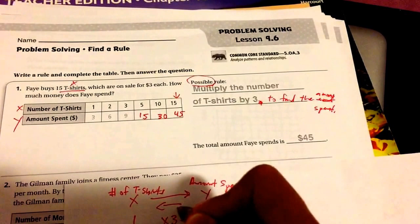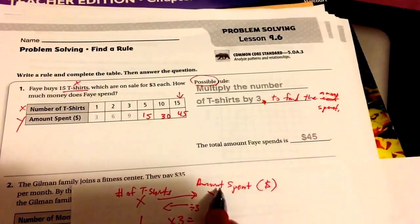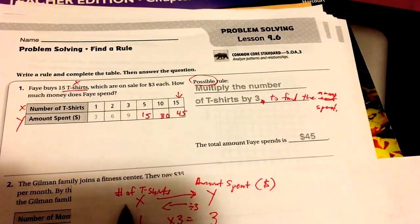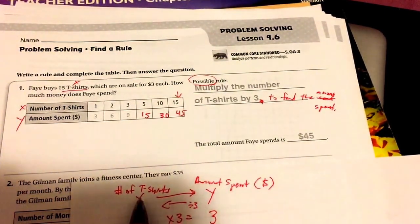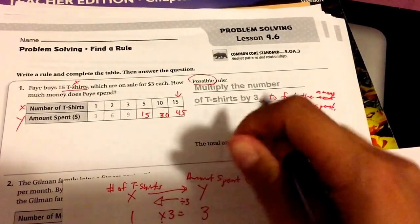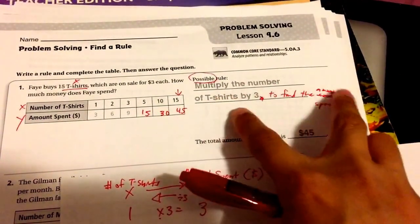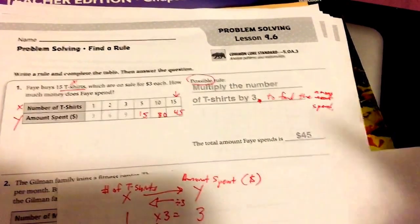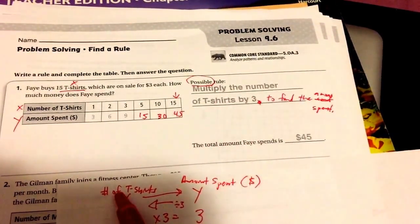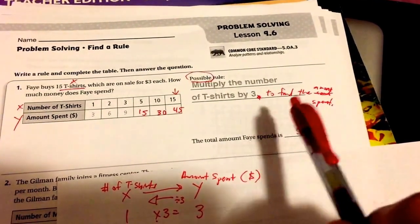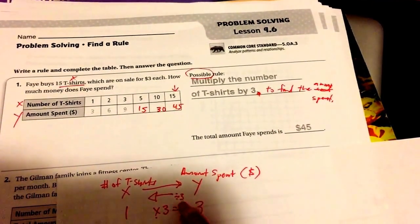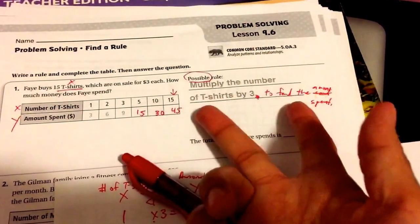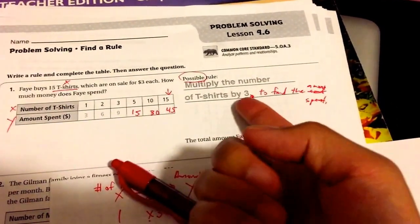The other way you could do it is, if you're going this way, you're going to do the opposite. So what's the opposite, the inverse, of multiplication? Division. So you could take the amount spent, divide by three, to find the number of t-shirts. So you could divide the amount spent by three to find the number of t-shirts. We're going to do this a little bit more in class. If you at least understand the one that makes sense—the multiplying one, because we're going from X to Y—you can keep that rule for now.